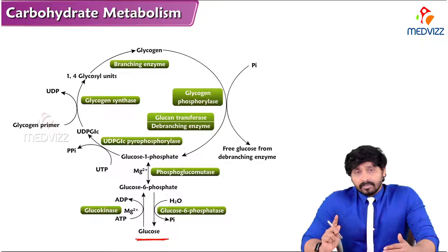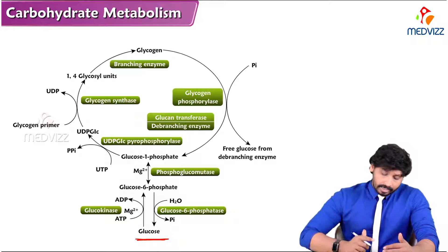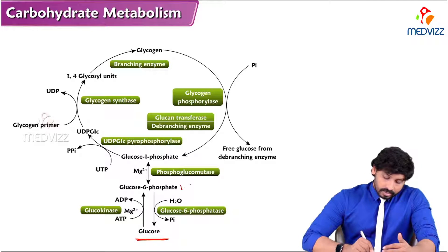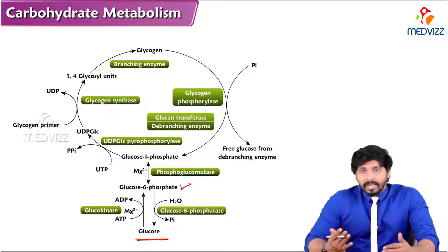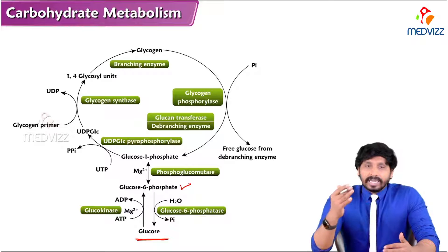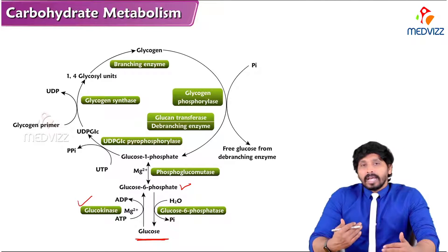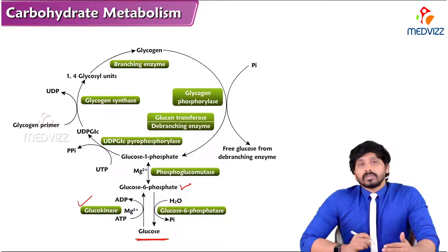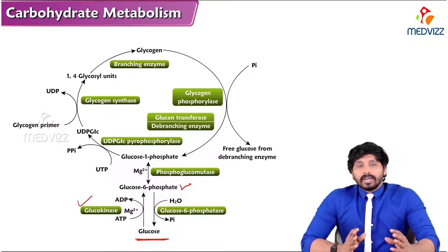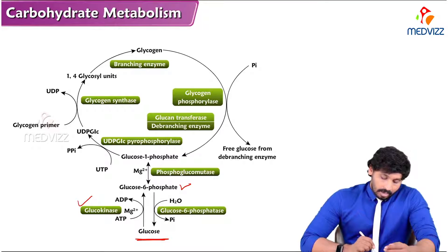Looking at the schematic representation of the pathway, the starting substance is glucose. When we have extra glucose, it is converted to glucose-6-phosphate. The phosphate group is donated by ATP, which is converted to ADP, by the enzyme glucokinase. Small amounts of magnesium are needed as an activator of glucokinase.